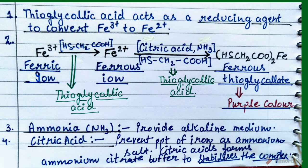Now I will discuss with you the role of thioglycolic acid, citric acid, and ammonia in the limit test of iron. Thioglycolic acid acts as a reducing agent to convert ferric iron to ferrous iron. Ferrous iron then reacts again with thioglycolic acid to form ferrous thioglycolate in an alkaline medium. The alkaline medium is provided by the ammonia present in the solution. Ferrous thioglycolate is purple in color.